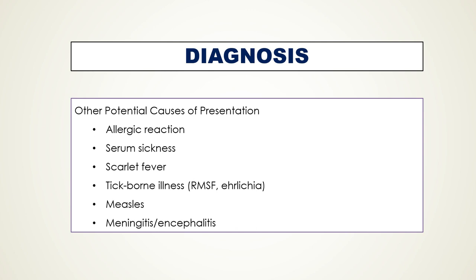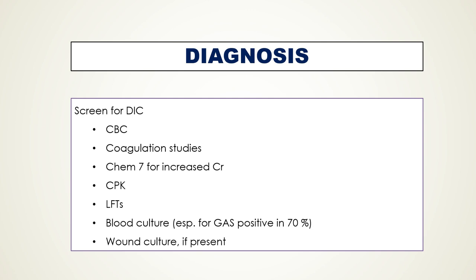These patients are very, very sick, so we have to worry about disseminated intravascular coagulation. We get a broad spectrum of labs including a complete blood count (CBC), coagulation studies such as PT, PTT, and INR, a Chem-7 to look for bumped creatinine, and serum CPK, which will often clinch the diagnosis. We should also look for bumped LFTs.